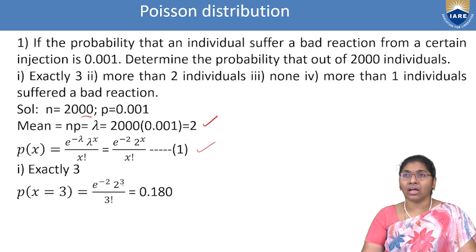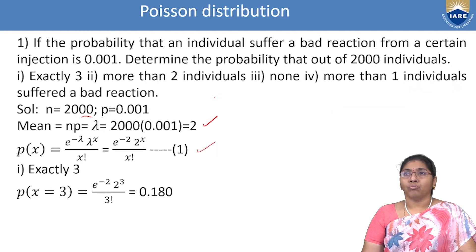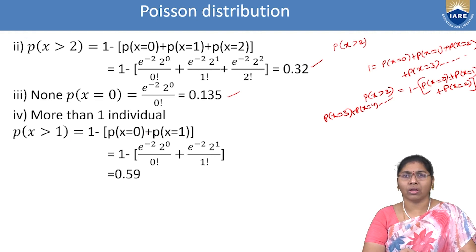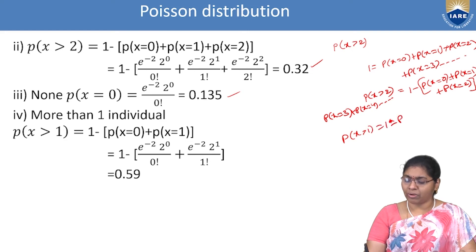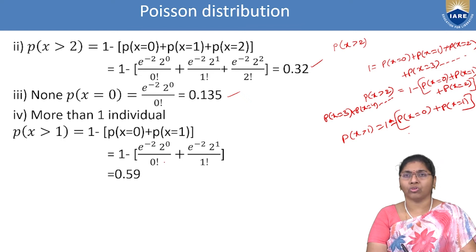Third condition: none — substitute x = 0 in equation (1) to get P(X = 0). Fourth condition: more than 1 individual. P(X > 1) = 1 − [P(X=0) + P(X=1)]. Substituting x = 0 and x = 1, we get 0.59.